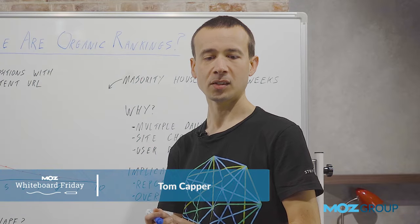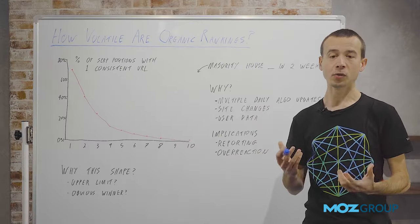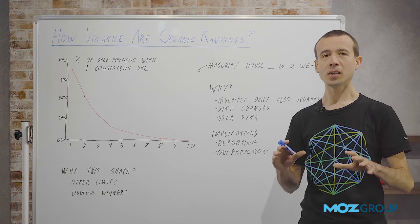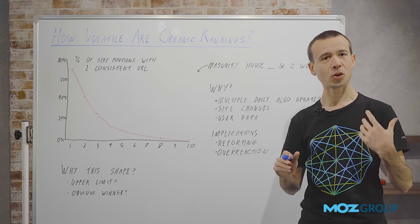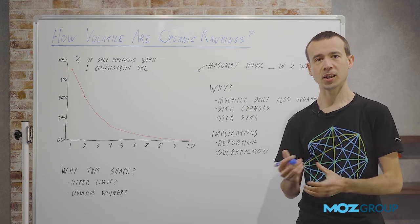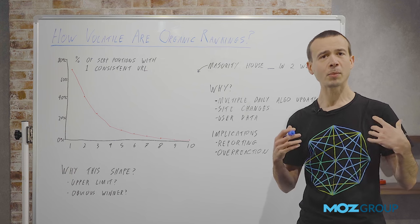Happy Friday, Moz fans. Today I want to talk about this question: how volatile are organic rankings? Now you might instantly think about things like core updates or other big algorithm updates we've seen in the last year or two. But I'm actually talking about more day-to-day routine fluctuation in Google rankings, which I think is a lot more prevalent and a lot larger in magnitude than most SEOs tend to think.